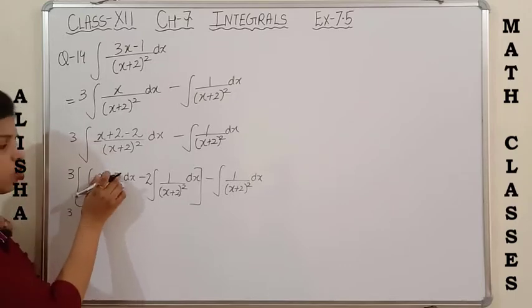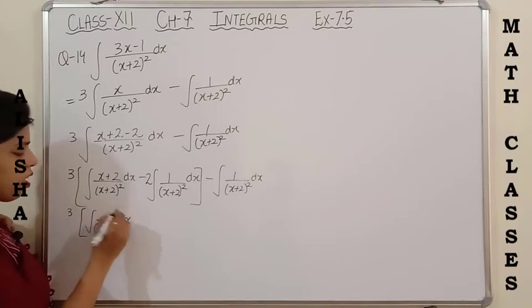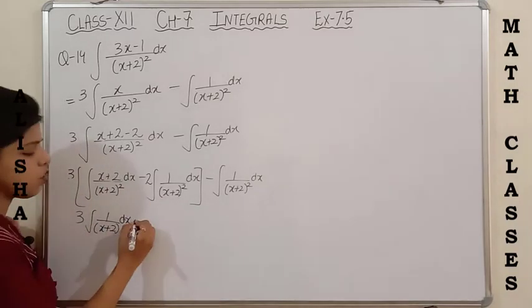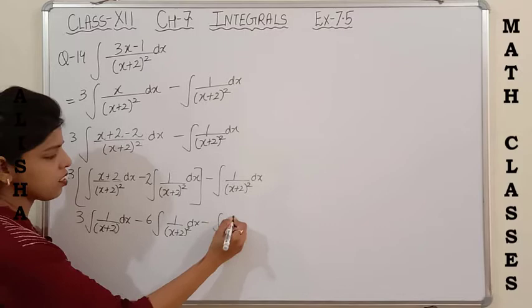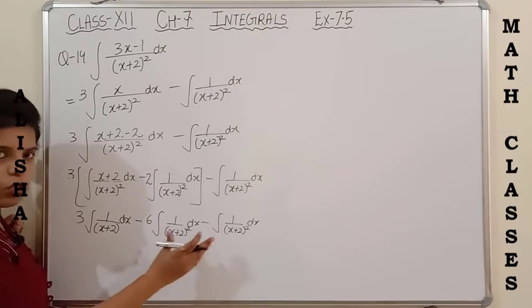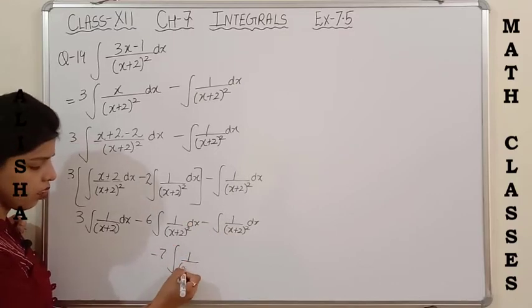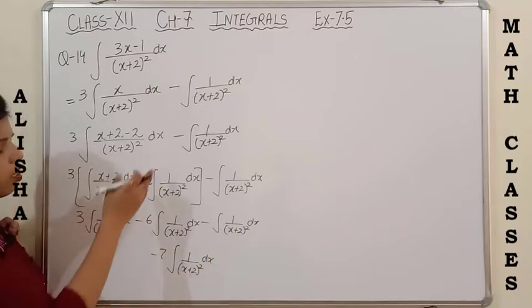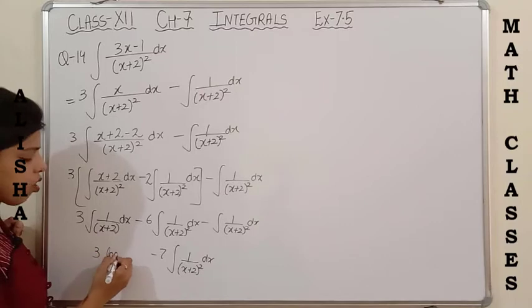One power cancels: (x plus 2) is cancelled by (x plus 2), leaving only one power, giving integration of 1 upon (x plus 2) dx. Then 3 into minus 2 gives minus 6. As both integrals of 1 upon (x plus 2) squared are the same, we combine minus 6 minus 1 to get minus 7. So we have separated this integral without using the partial fraction method, and integration of 1 upon (x plus 2) is log(x plus 2).